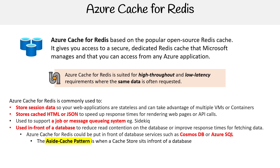Another use case is putting Redis in front of a database to reduce read contention — meaning too many reads are hitting the database and slowing everything down. You can put a cache in front of that to improve response times for fetching data, taking the load off the database. Maybe you have a database that's expensive to call, so it's going to save you money. You can put this in front of Cosmos DB or Azure SQL, or any kind of database that returns data. This is actually called the cache-aside pattern — it sits in front of the database. If the data is up to date and it's in the Redis store, it'll return from there; if not, it'll go to the database. The database can also proactively send data to Redis so it doesn't have to do a cache hit or miss — it can just have the data there.